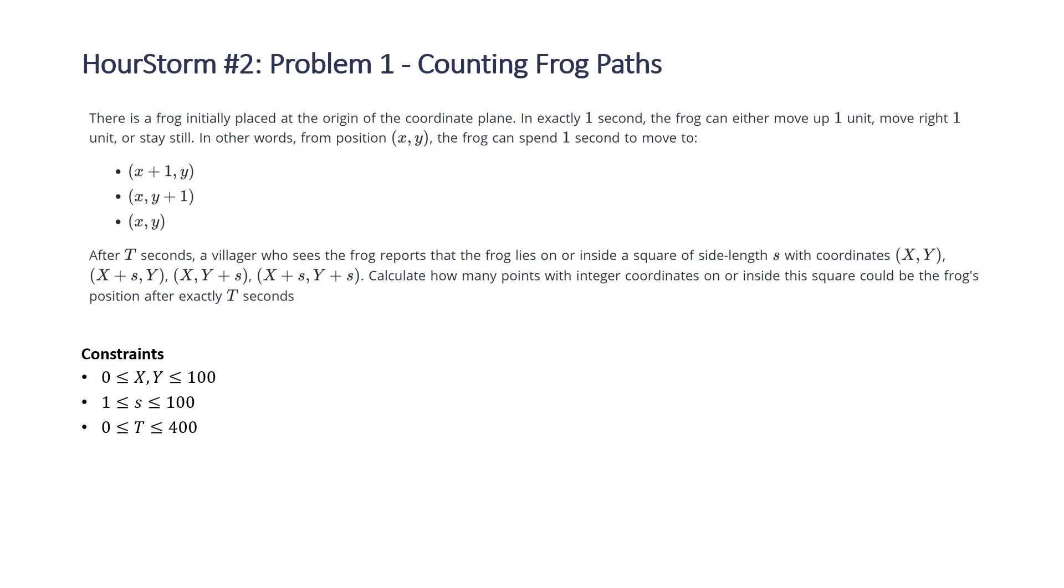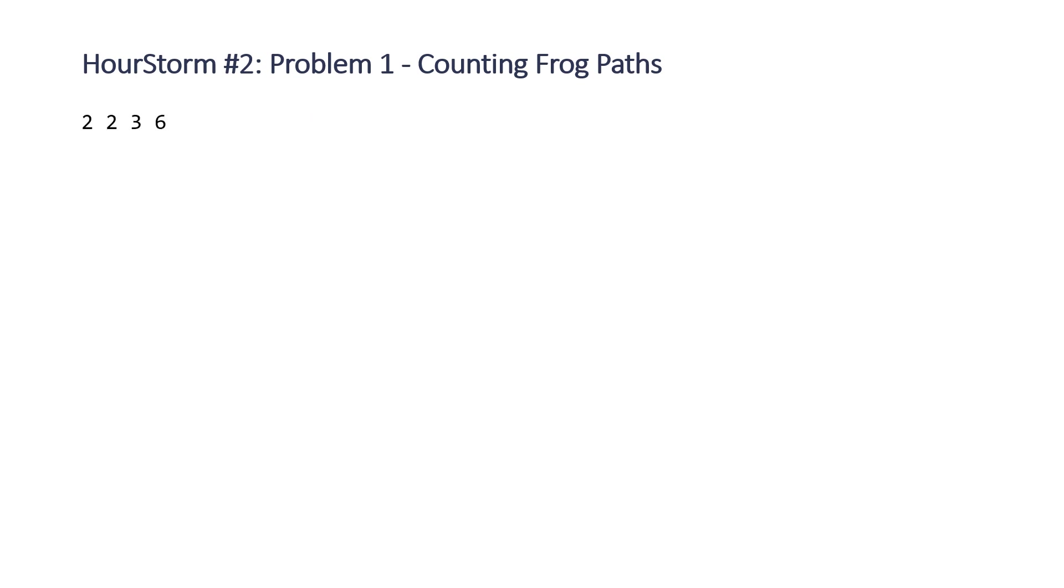The constraints for our problem are that X and Y will be between -100 and 100, S will be between 1 and 100, and T will be between 0 and 400. Let's take a look at the example that HackerEarth provided. The input is 2 2 as the starting coordinates of our square, 3 is the side length, and 6 is the number of seconds for our frog to move.